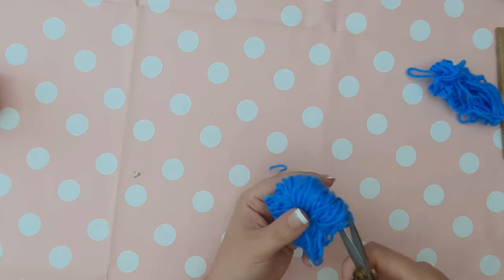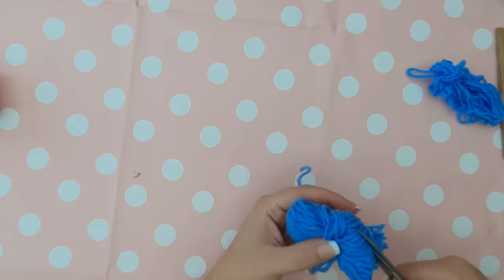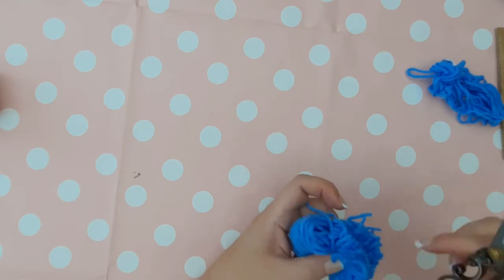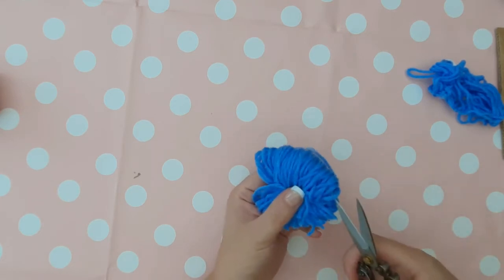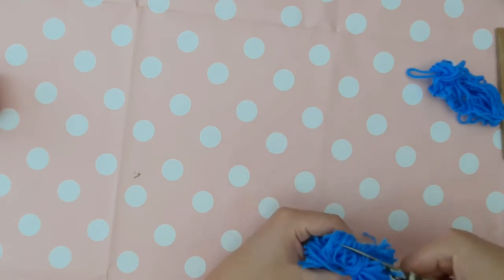Then get your scissors and start cutting the top of each loop. It's much easier doing it off the cardboard. It's too taut on the cardboard and makes it difficult for the children, so this is the easier option.